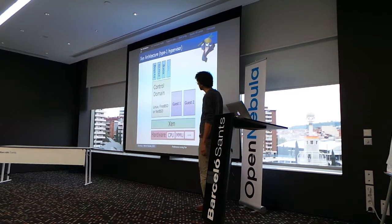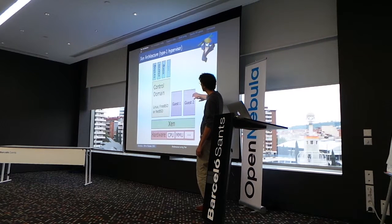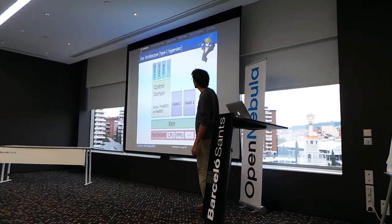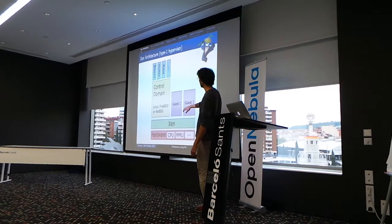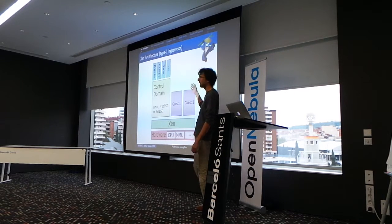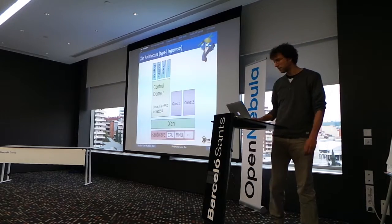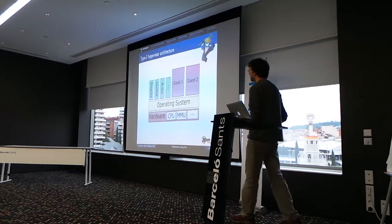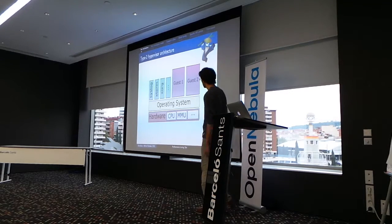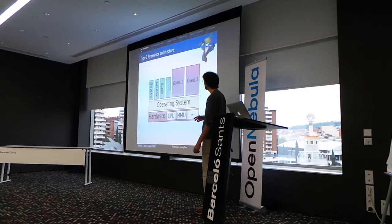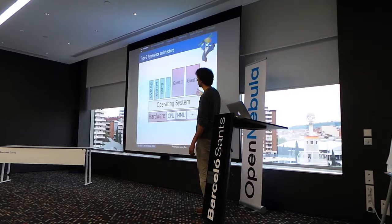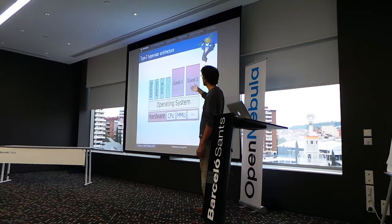In this slide I have a typical Xen system: the hardware, Xen running on top, then the control domain and a couple of guests. I also added some tasks to compare a type 1 hypervisor with a type 2 hypervisor. Xen only manages the guests, and each guest has its own tasks or applications running inside. If we compare that to a type 2 hypervisor like KVM or VirtualBox, you have the hardware, the operating system containing the hypervisor, the tasks running inside the OS, and then also the guests.